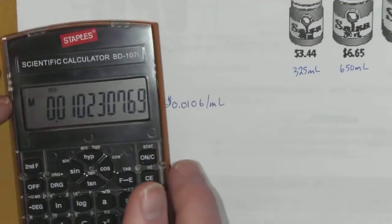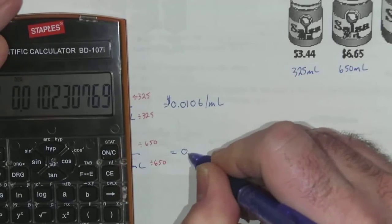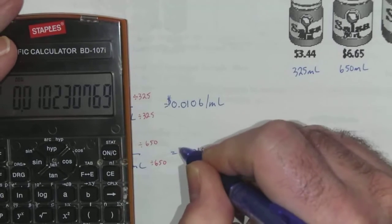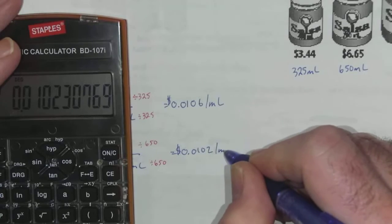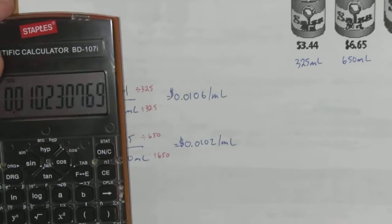Not a lot of difference but it's a little bit different. On that one, that is $0.0102 per milliliter.